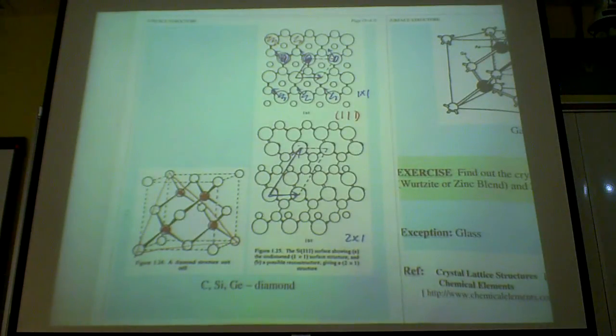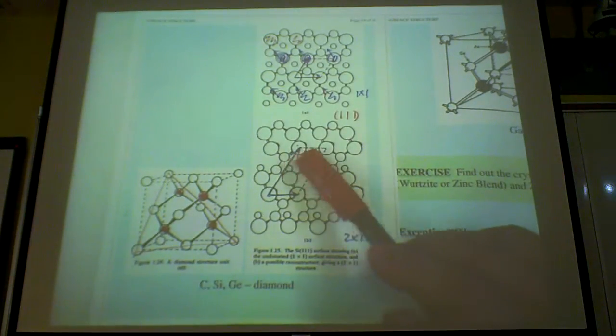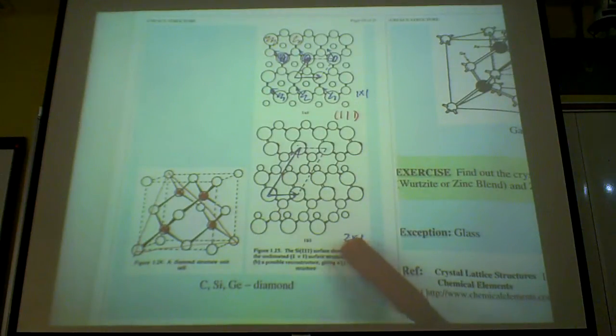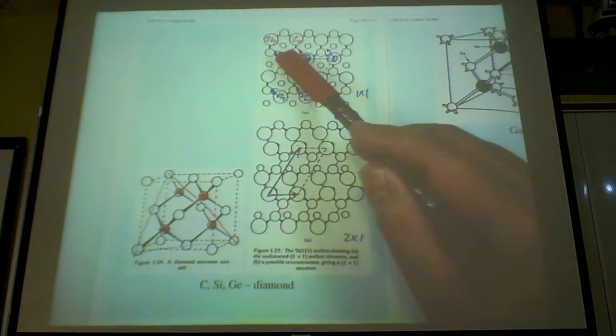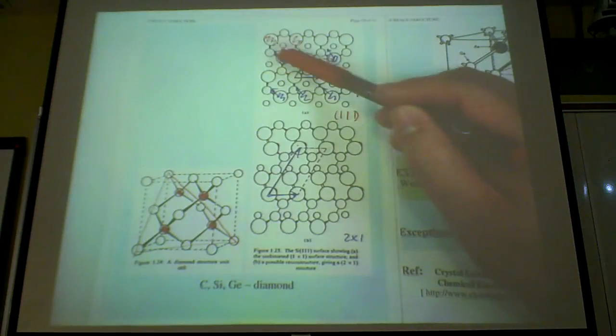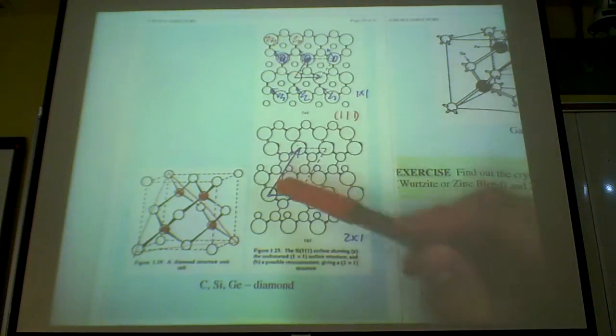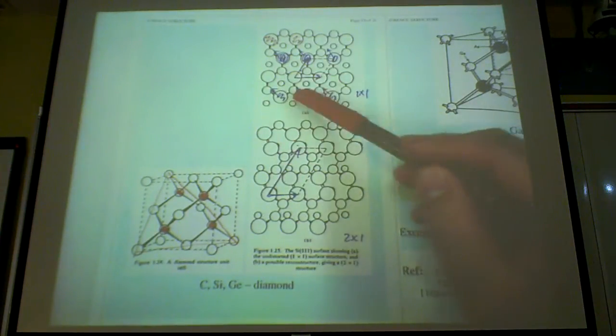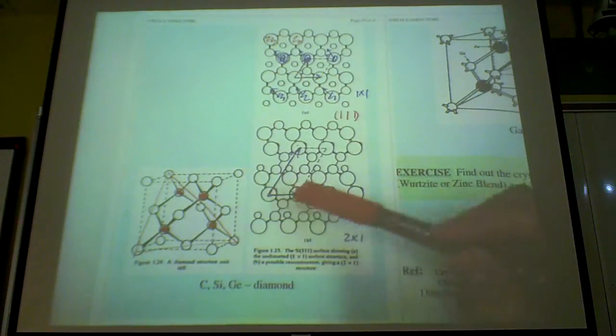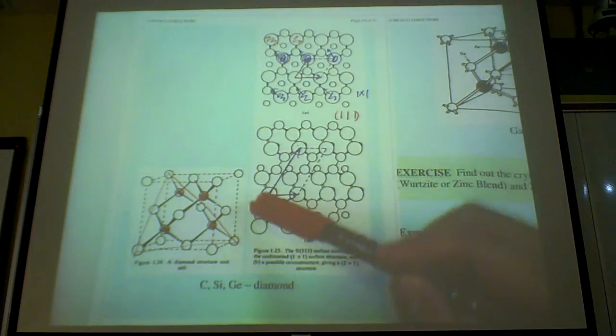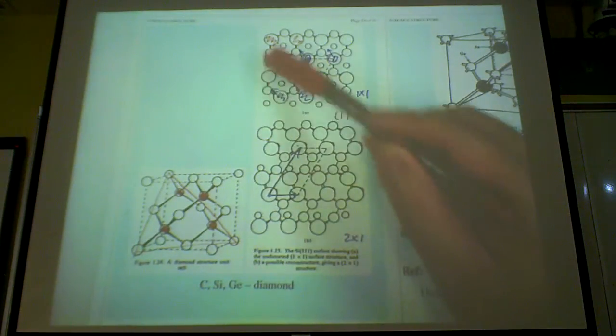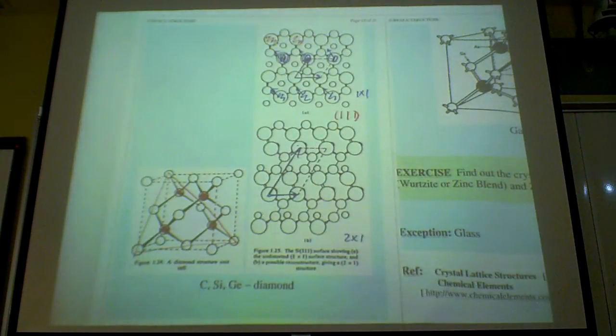What I want to show is that they could reconstruct into a 2x1 reconstruction, so some of these atoms could move closer. For example, these two move closer, and these two move closer together, like this. This two move closer, this two move closer, and opening a gap.